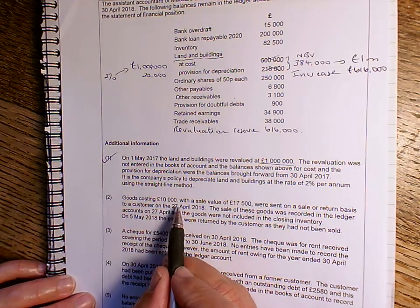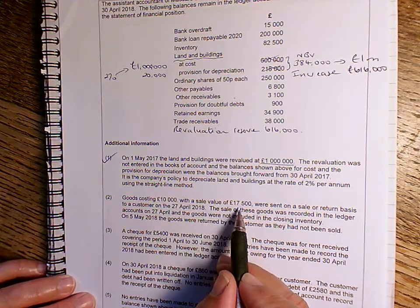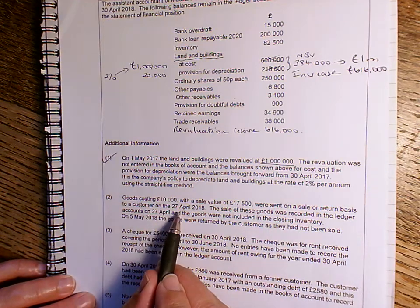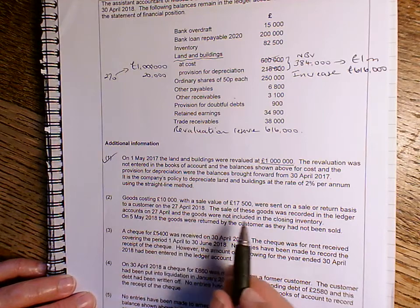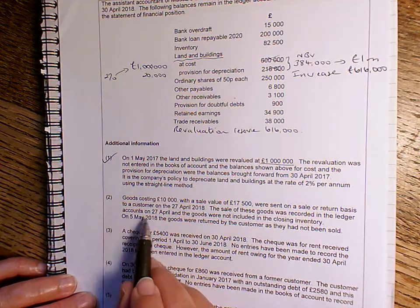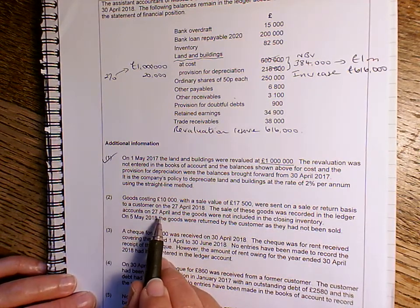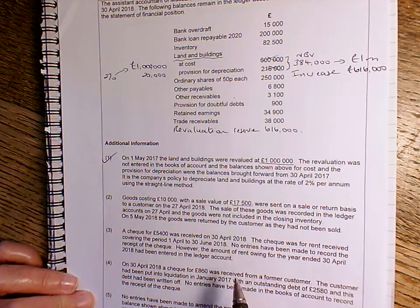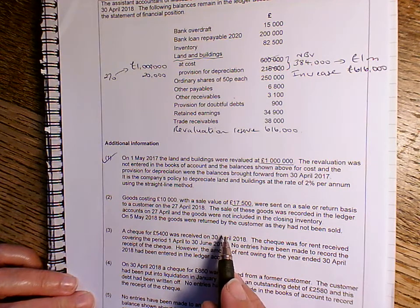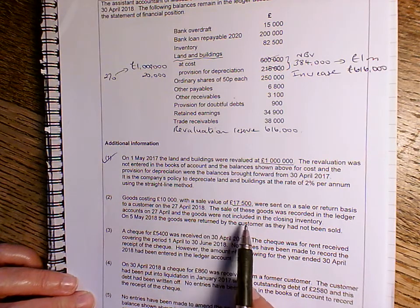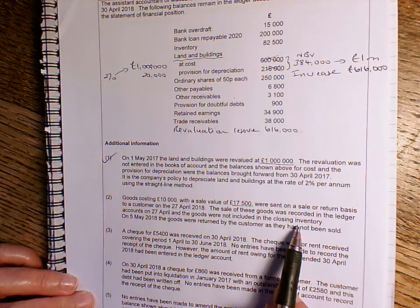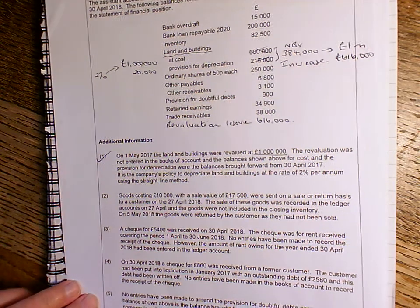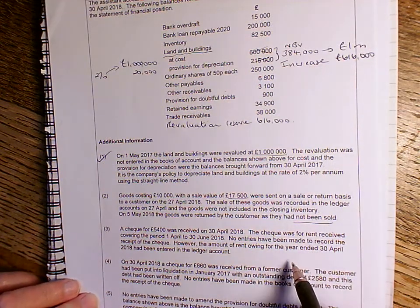Point two, we've got goods that cost £10,000 and that had a sale value of £17,500 were sent on a sale or return basis to a customer on the 27th of April 2018. The sale of these goods was recorded in the ledger accounts at the 27th of April. So that means that by the end of the year, that sale at the sale price of £17,500 had been included in the income statement. But the goods hadn't been recorded in the closing inventory.